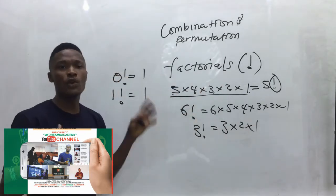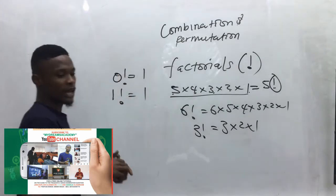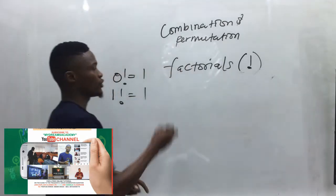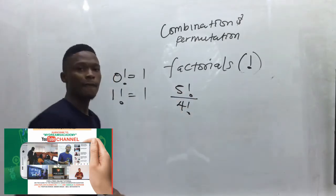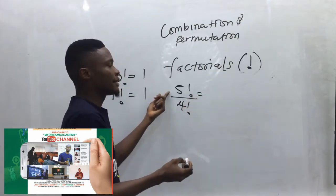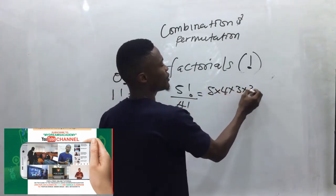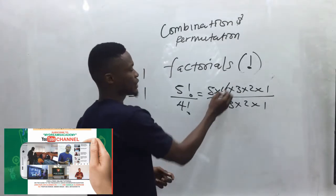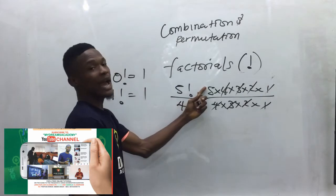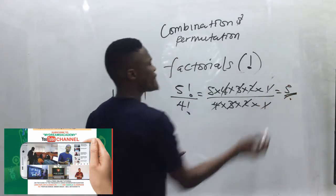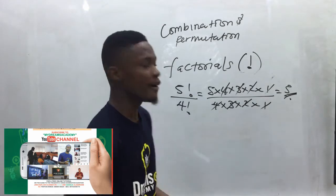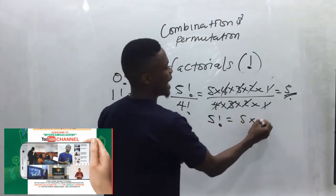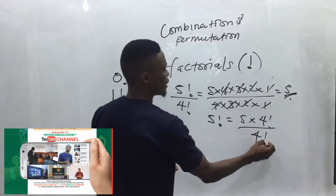For example, if asked to evaluate five factorial divided by four factorial, you expand: five times four times three times two times one, all over four times three times two times one. The fours, threes, twos, and ones cancel, leaving just five. A shorter method is to write five factorial as five times four factorial, then cancel four factorial, giving you five.